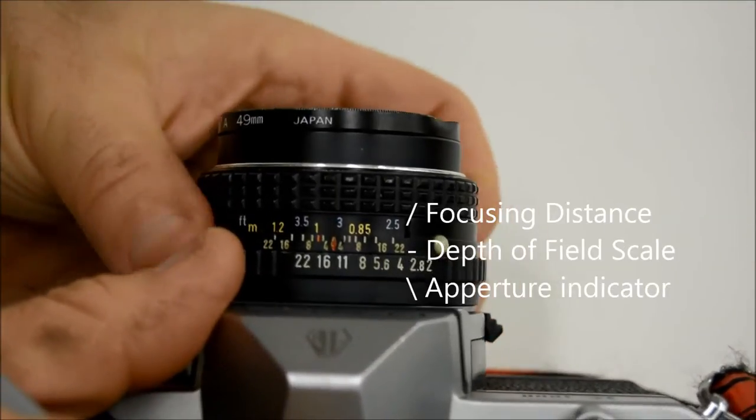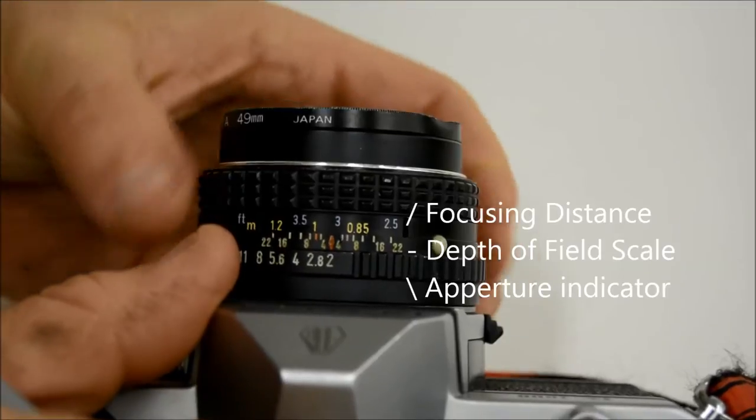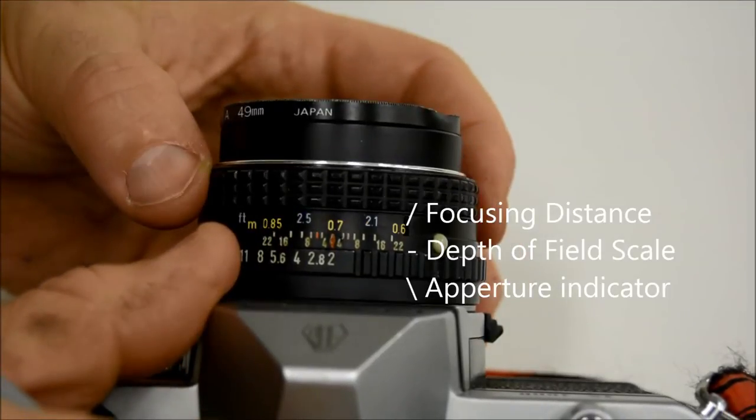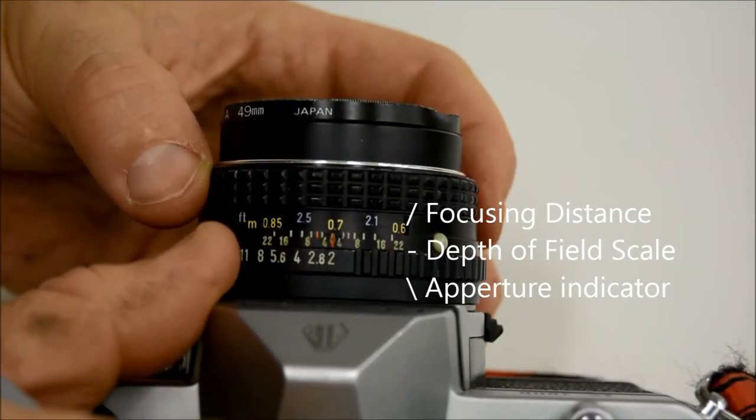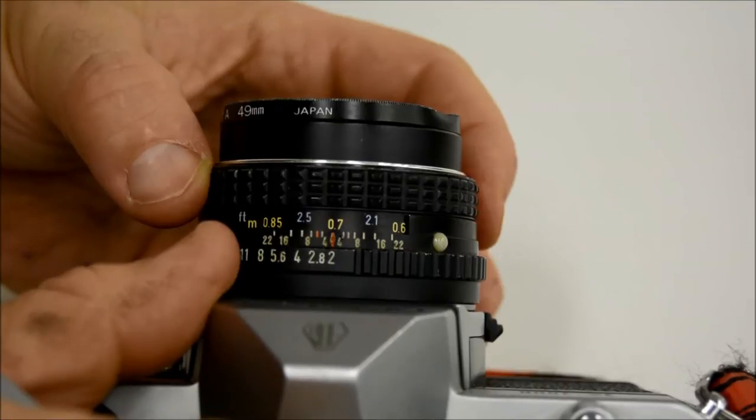So if you're shooting at f2 and you focus on something that's relatively close, then you would only have the foreground in focus, and all the background would be blurry, much like this.